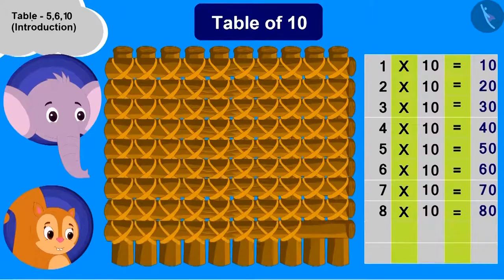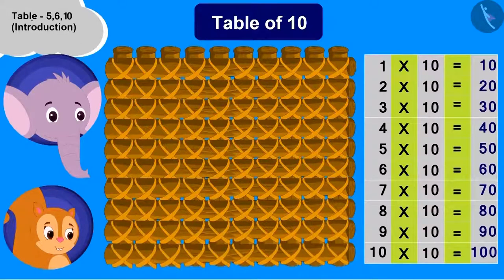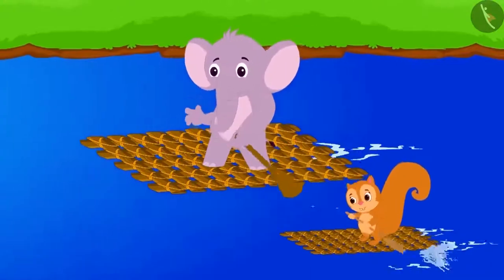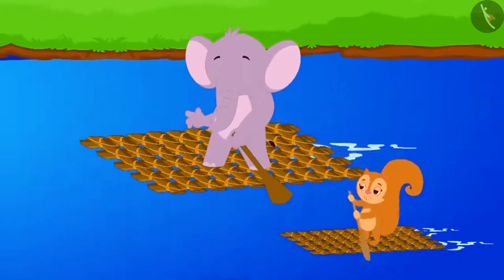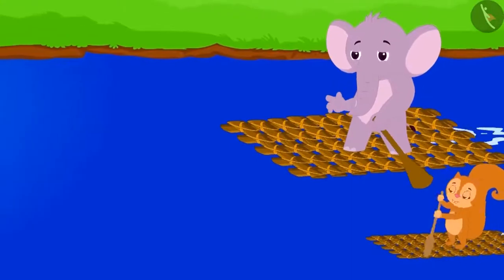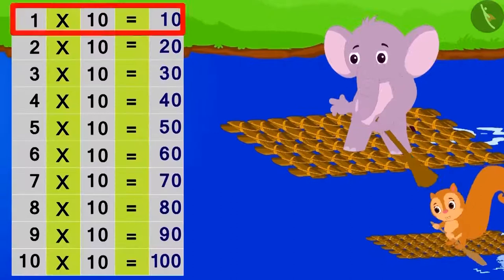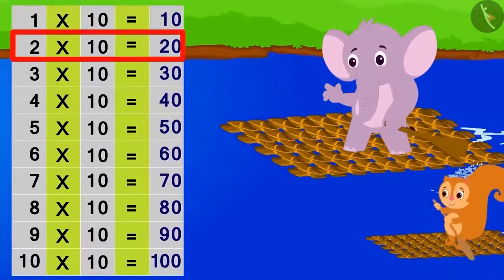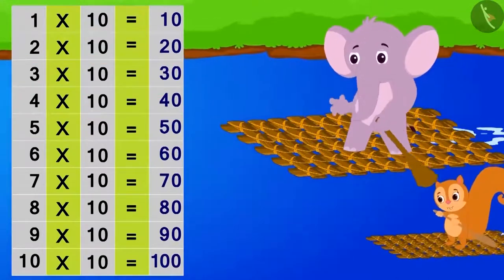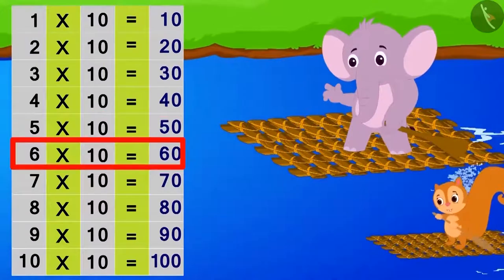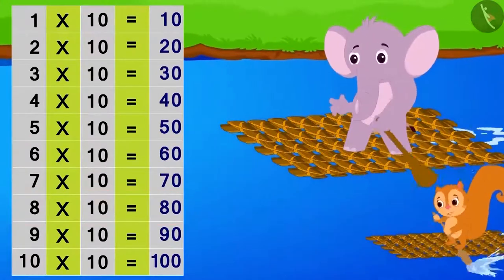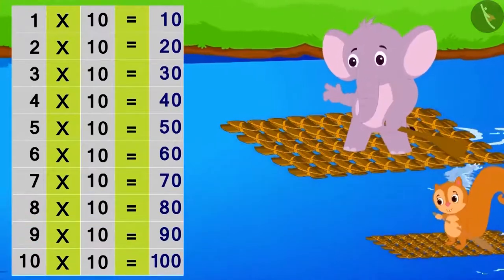Now Chanda and Appu sailed their boats humming the table of ten: ten ones are ten, ten twos are twenty, ten threes are thirty, ten fours are forty, ten fives are fifty, ten sixes are sixty, ten sevens are seventy, ten eights are eighty, ten nines are ninety, ten tens are one hundred.